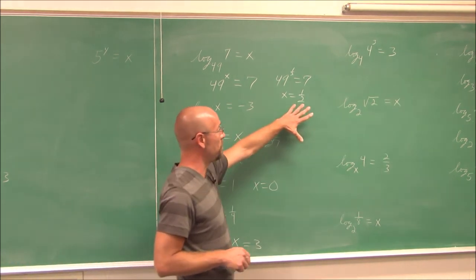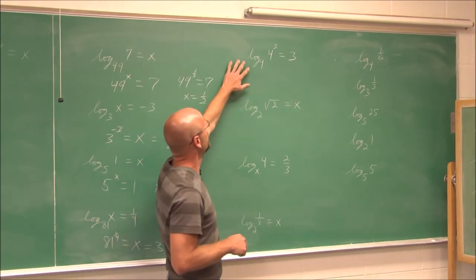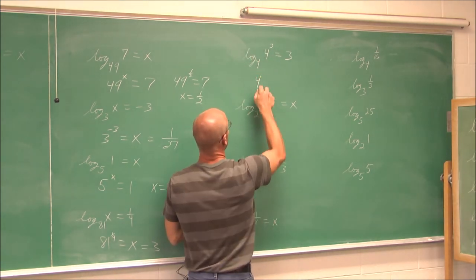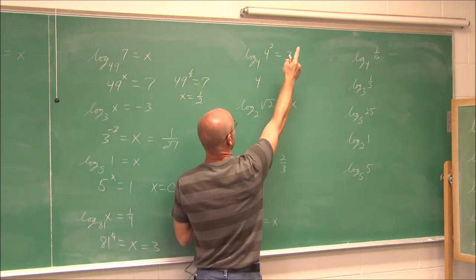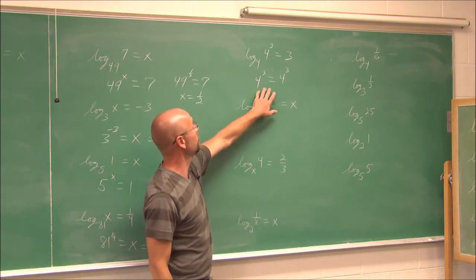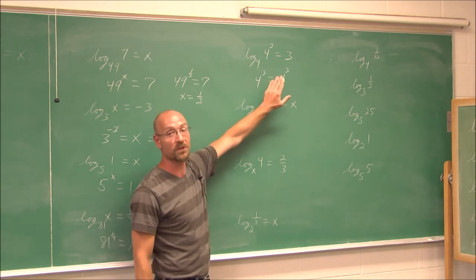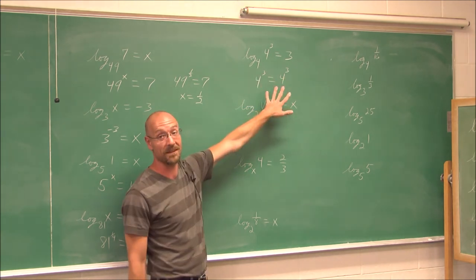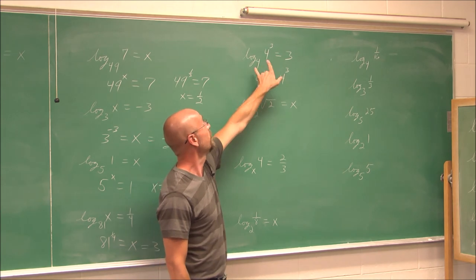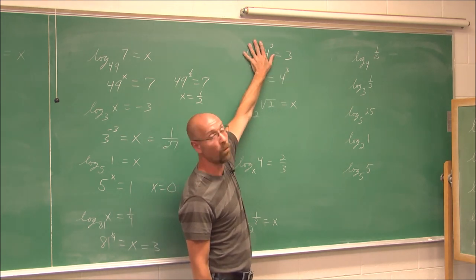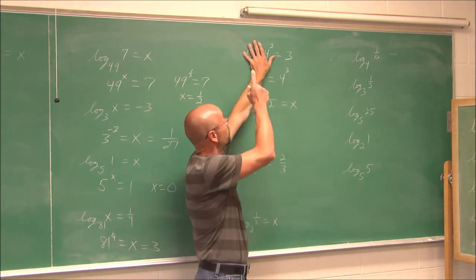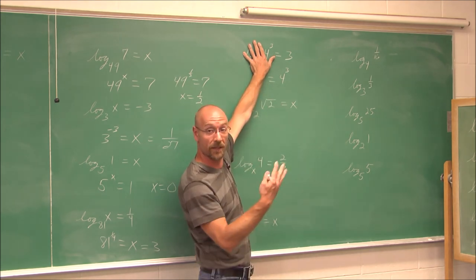Here: log base 4 of 4 cubed. Writing in exponential form, 4 is my base and 3 is my power, so 4 to the 3 equals 4 cubed. The argument is 4 to the third and the right side is also 4 cubed — it doesn't get more true than that. This illustrates another rule: when the bases are the same, it reduces to the power, so the answer is simply 3.